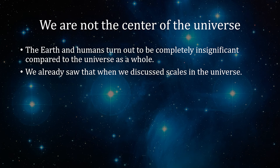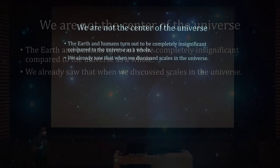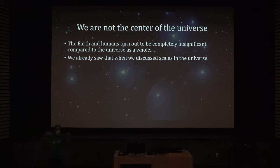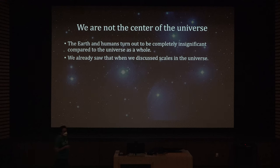The Earth and humans turn out to be completely insignificant compared to the universe as a whole. We already saw this in the first week when we discussed scales in the universe — the mind-boggling differences in scale between humans and even the entire Earth, or even the entire solar system, compared to the entire universe. If a human is one meter, the observable universe is 10²⁷ meters — 27 orders of magnitude larger than a human.